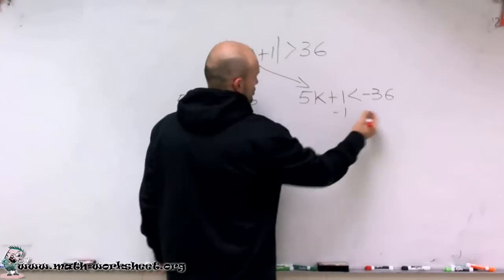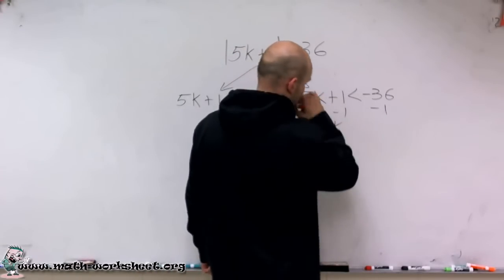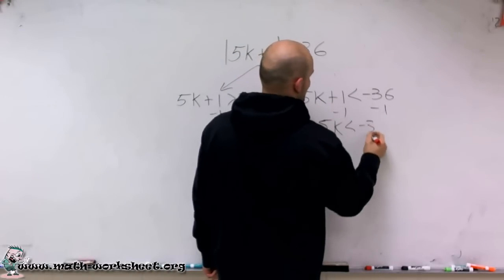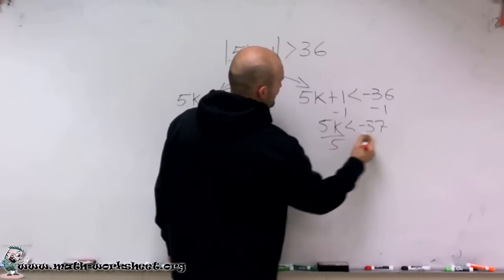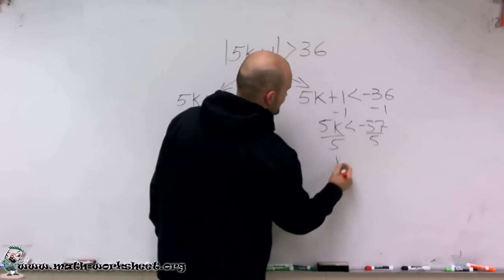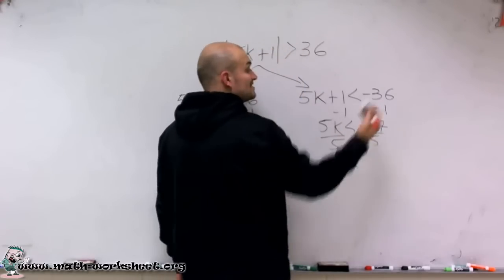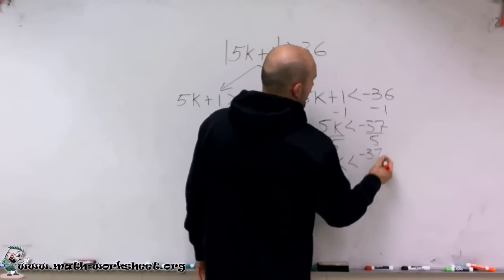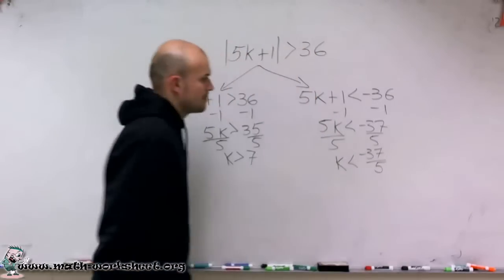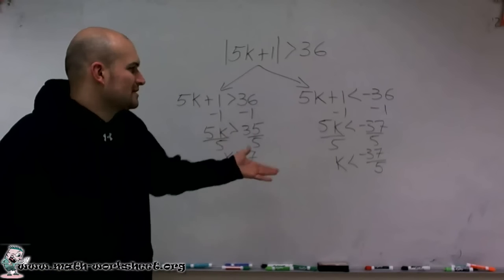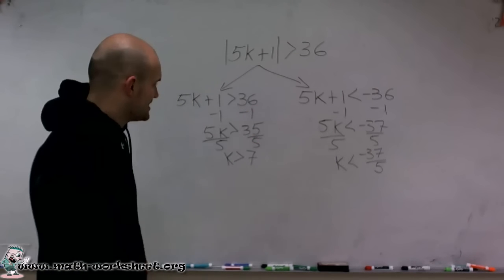Over here, I subtract, and I get 5k is less than negative 37, divide by 5, and I get k is going to be less than, since 5 does not divide into negative 37, I'll just leave that as a fraction. And we can say it's roughly going to be 7 and a decimal 4.